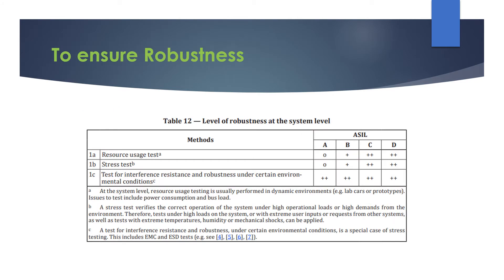To ensure robustness at the system level, we need to derive test cases based on three different methods: the strict resource usage test, stress test, and test for interference resistance and robustness under certain environmental conditions.